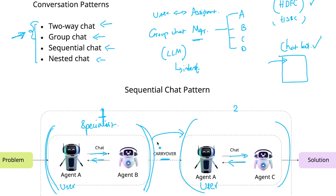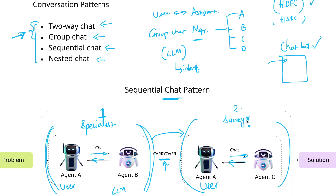Once the user discusses with the specialist agent and tries to resolve all the queries, we carry over whatever data we obtain from that conversation to the next set of agents, which is a surveyor agent. The surveyor agent collects feedback or perceives what the feedback is based on the context derived from the previous set of agents. Using this carryover mechanism, the LLM summarizes all messages exchanged between agent A and agent B, and the summary is fed forward as context to the surveyor agent.